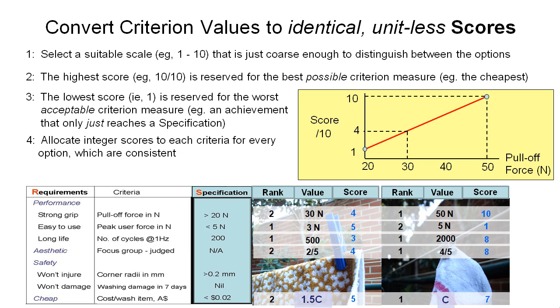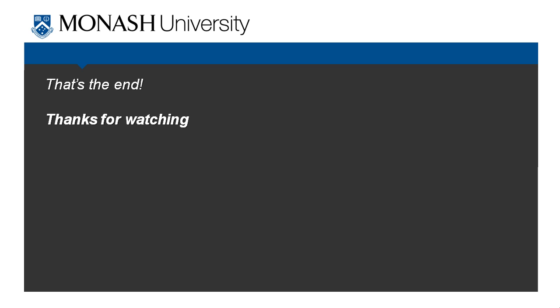So in this video, we've shown you how to go about ranking your different concepts. That's pretty straightforward, and if that ranking system fails to yield a single clear winner, then you have to go into a little bit more detail by putting some estimated values to these different requirements and criteria, and from there non-dimensionalizing those values into a score, which we can then use in the next step of the process to figure out which one of these concepts is going to be the best one for us to develop further. That's the end of this video, thanks for watching.